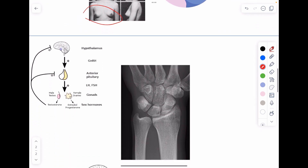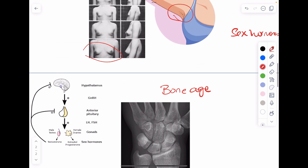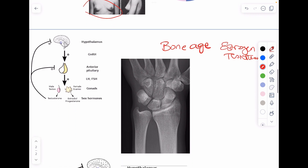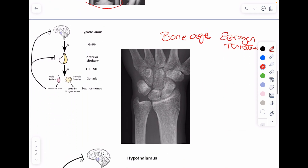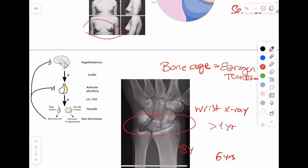We confirm true precocious puberty initially with bone age. When sex hormones — estrogen or testosterone — are present, they lead to increased linear bone growth. Neither thelarche nor adrenarche will result in bone growth; only gonadal development will. So I must do a wrist X-ray. If the bone age is beyond one year of the child's chronological age — for example, a six-year-old with a bone age of eight — that indicates advanced bone age and is a sign of gonadal maturity with sex hormones at work.